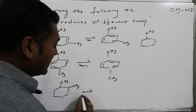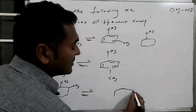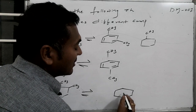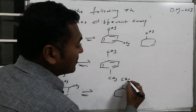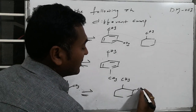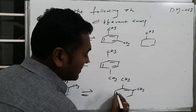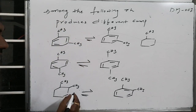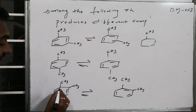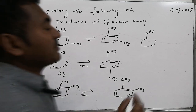For ortho-dimethylbenzene (ortho-toluene), with methyl groups at adjacent positions, we can expect a double bond at one position, and there is another alternate Kekulé structure with the double bond shifted.